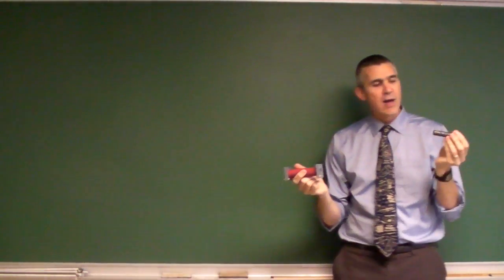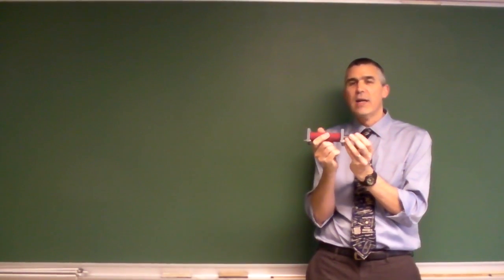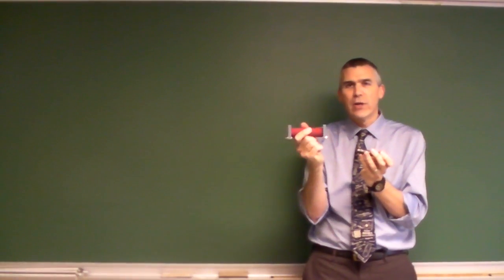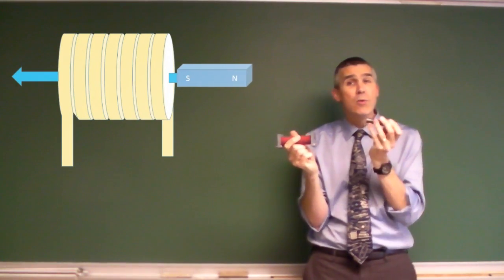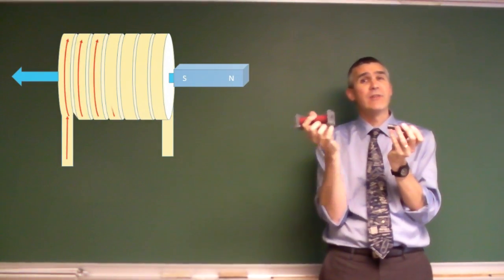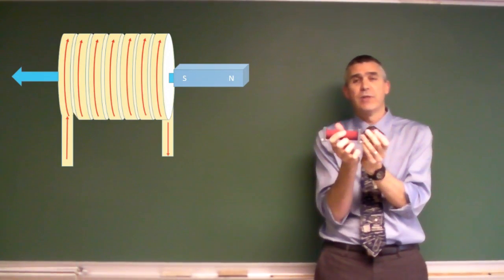So if I have the south end of a magnet and I stuff that into that coil, the coil's current will in turn produce a magnetic field that will oppose what I'm trying to do and will expose a south end towards me, resisting the motion of the magnet.